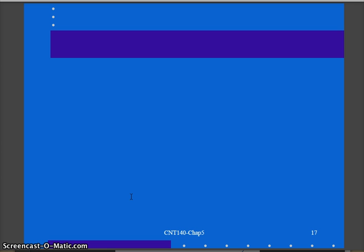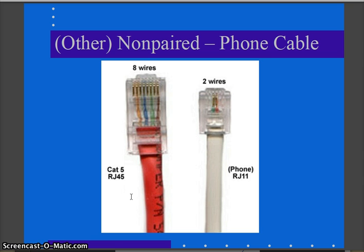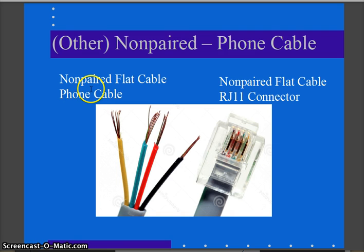Now we'll touch on non-paired or phone cable. Non-paired phone cable is typically a flat two- or four-wire cable terminating in an RJ11 jack — your standard phone connection — as opposed to the eight-wire RJ45 twisted pair, like Category 5E cable used for networks. Here's a picture of non-paired flat cable with four ordinary wires, color-coded but not twisted together, terminating in an RJ11.